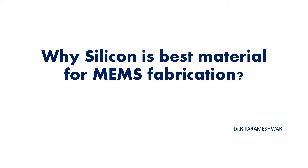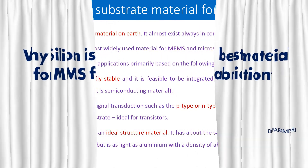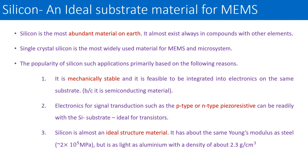Why is silicon the best substrate material for MEMS fabrication? The first point is that silicon is the most abundant material on earth — it is easily available. It almost always exists in compounds with other elements, such as in sand. So it is an easily available material on earth. For MEMS fabrication and micro system fabrication, single crystal silicon is the most widely used form.